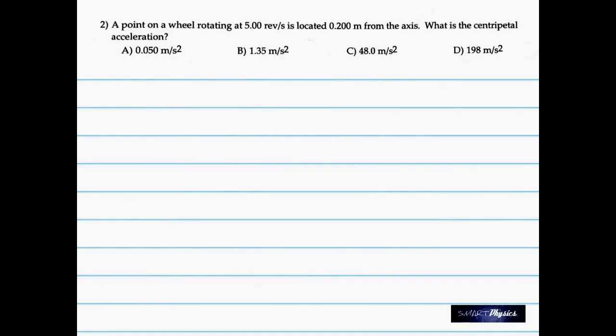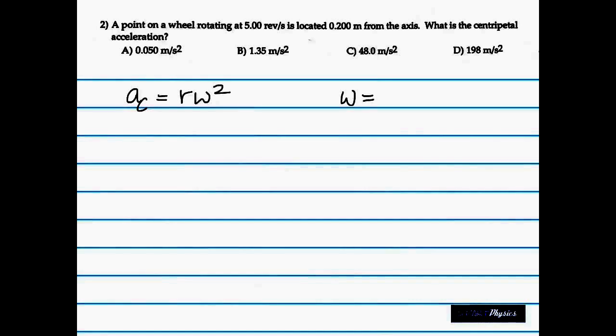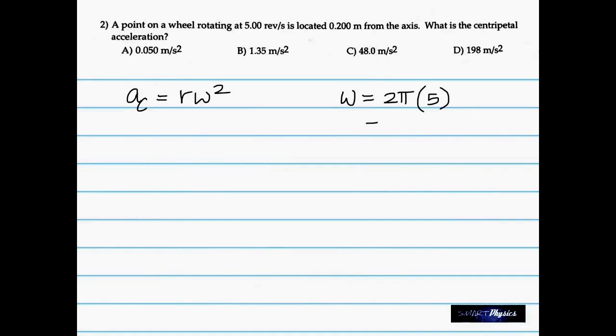On to the second one. Here you have a V rotating at 5 revolutions per second. And there is a point located 0.2 meter from the axis. What is the centripetal acceleration? There are two formulas for centripetal acceleration. You can either put it as ac = V²/R or R times ω². Radius times omega squared. Omega is the angular speed and it's given by 2π times the frequency. Frequency is the number of revolutions in one second.